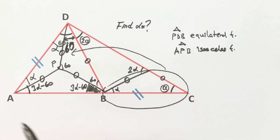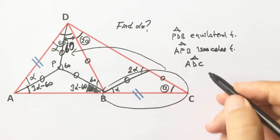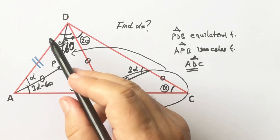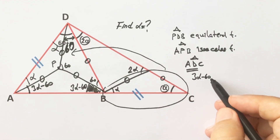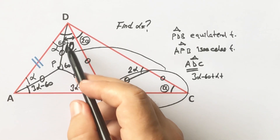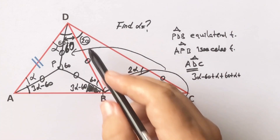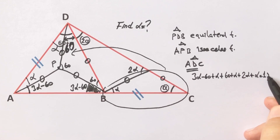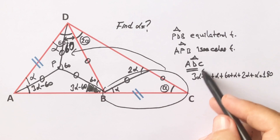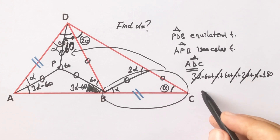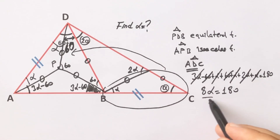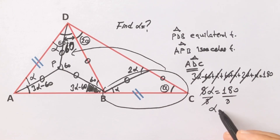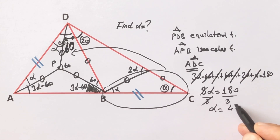Finally, we know that in a triangle the sum of interior angles equals 180 degrees. Therefore: three alpha minus 60 degrees, plus alpha, plus 60 plus alpha, plus two alpha, plus alpha equals 180 degrees. That gives us eight alpha equals 180 degrees, so alpha is 45 over 2 degrees. This was the first method.